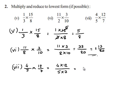This is equal to 4 times 12 gives 48 upon 5 times 7 gives 35. This can be written as 1 and 13 by 35 in the mixed fraction form.